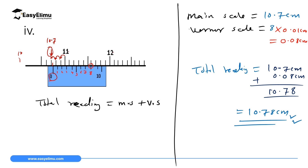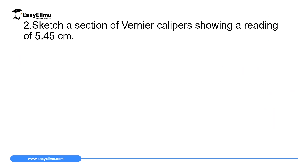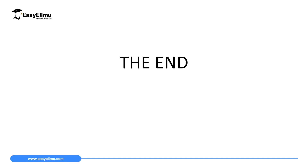As you can see, it has become very simple — you add the main scale reading to the Vernier scale reading multiplied by the least count. Since everything is simplified here at ECLIMU, I'm leaving you a question: given a reading, can you draw a diagram representing a reading of 5.45 on a Vernier caliper scale? That marks the end of our lesson today.